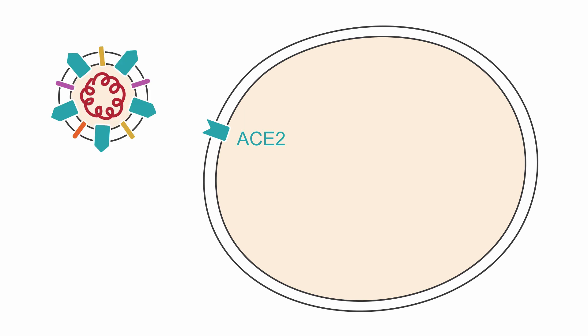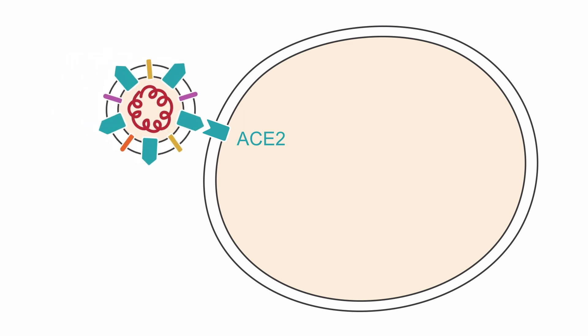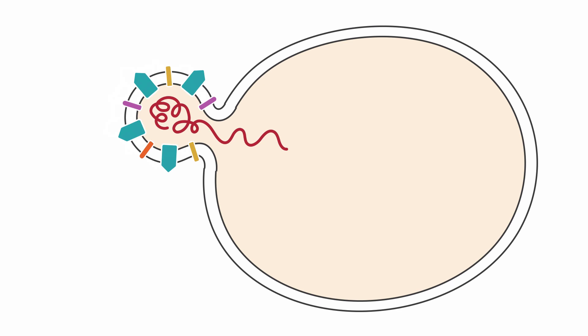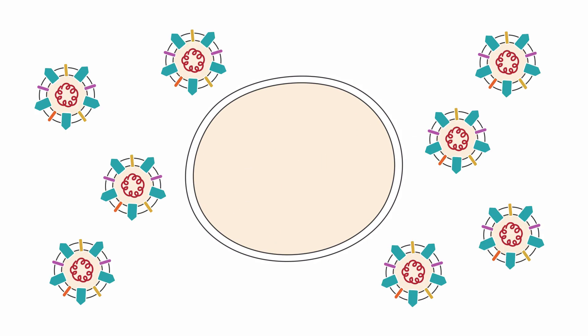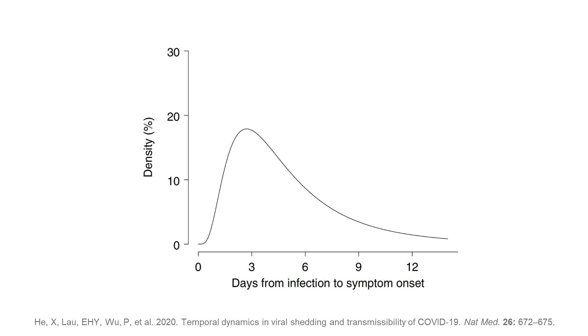The SARS-CoV-2 virus needs this ACE2 receptor to enter the cell. Inside the cell, the virus uses the cell's machinery to make numerous copies of itself and to invade even more cells. The median incubation period — the time between infection and onset of symptoms — is 5.2 days, but it can be as long as 14 days in some cases.